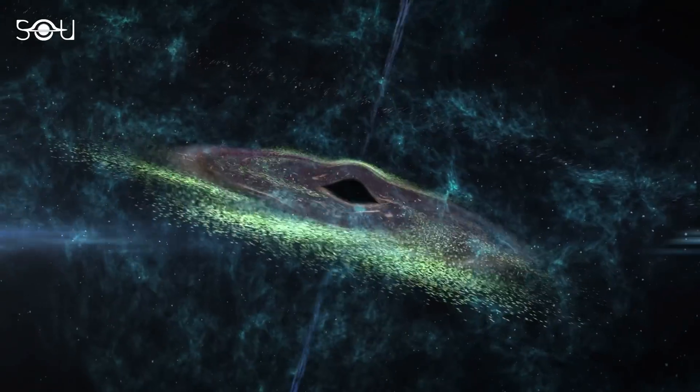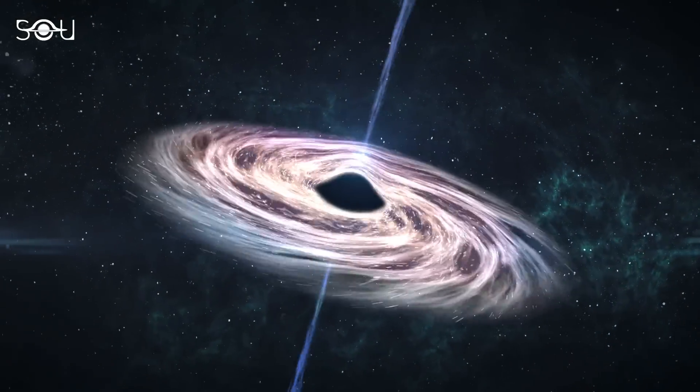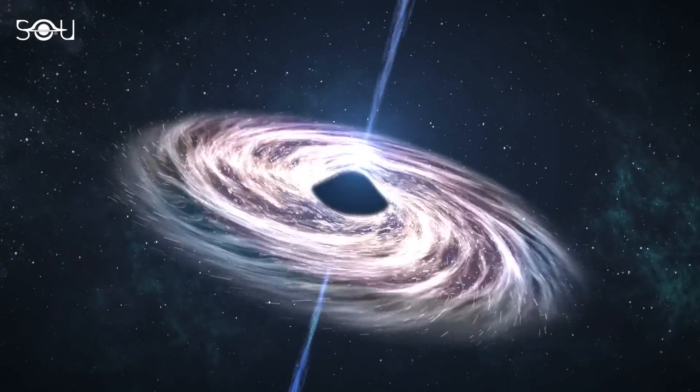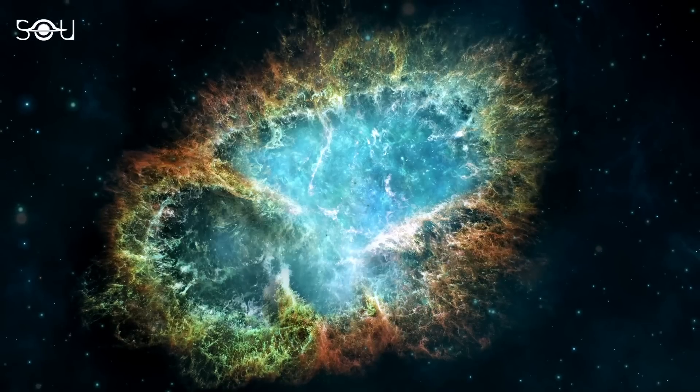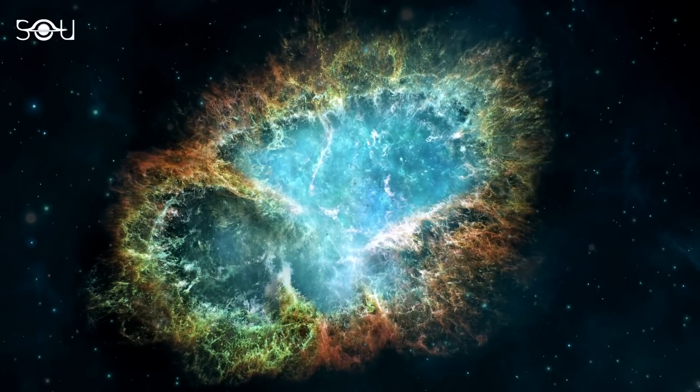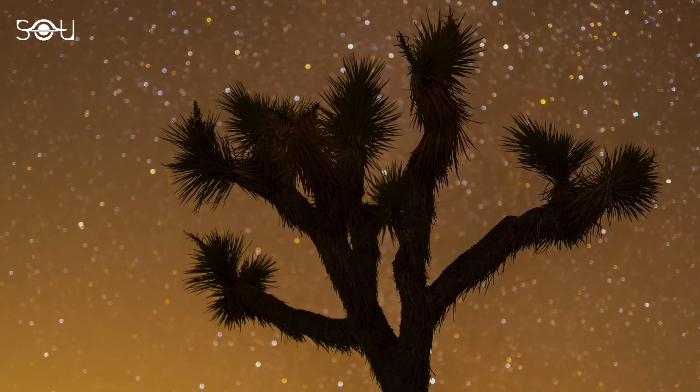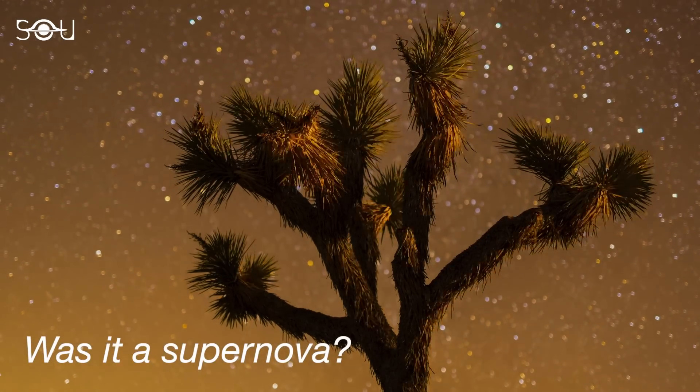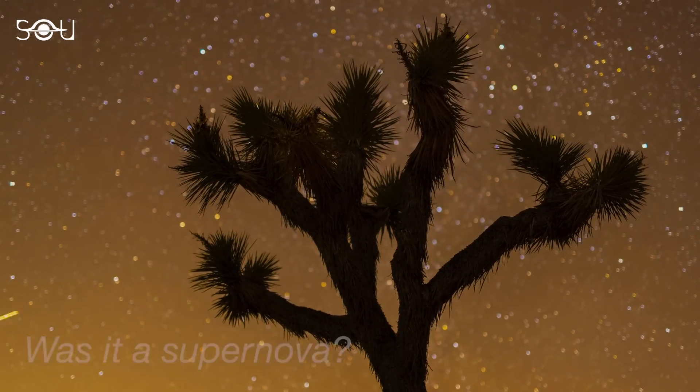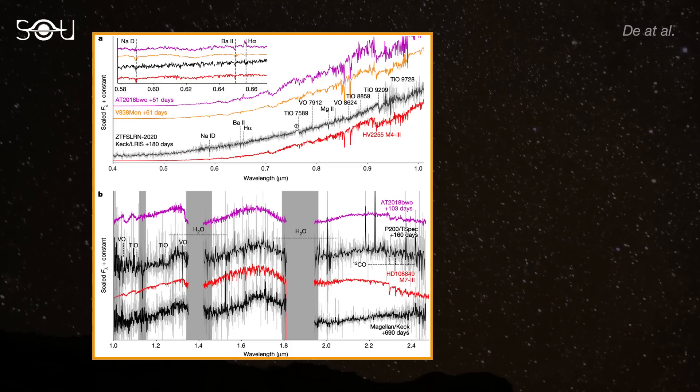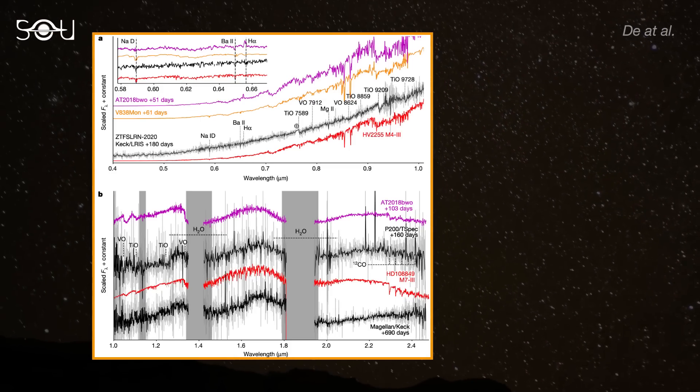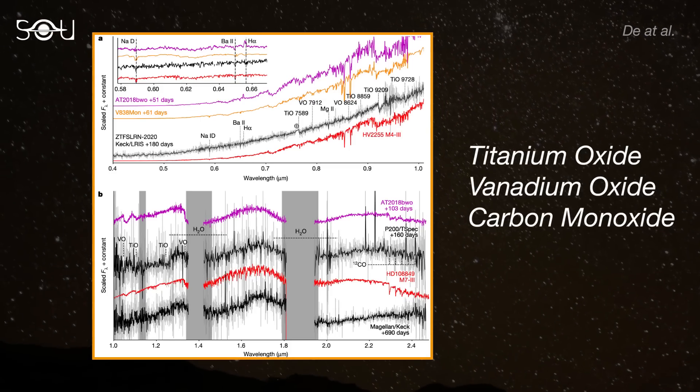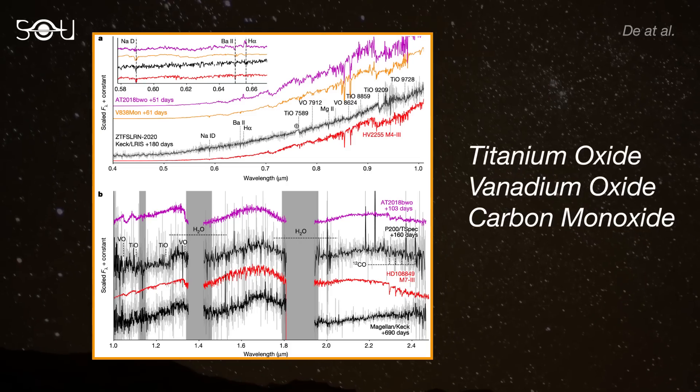While astronomers had dismissed the scenarios involving a white dwarf, neutron star, or black hole, two other possibilities remained. What if the event was some kind of supernova, or the merger of two stars? Clues to this puzzle were found in the light spectrum of the transient source. This spectrum revealed peculiar molecules such as titanium oxide and vanadium oxide as well as traces of carbon monoxide.